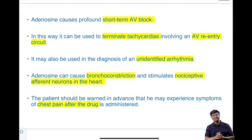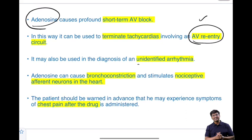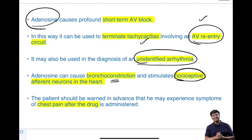If the modified Valsalva fails, give intravenous adenosine. Adenosine has a profound short-term AV block effect and is used to terminate tachycardias involving the AV re-entry circuit. It is also used in the diagnosis of unidentifiable arrhythmias. An important adverse effect is severe bronchoconstriction; it also stimulates nociceptive neurons within the heart, so patients must be warned in advance that they may experience chest pain after the drug is administered.